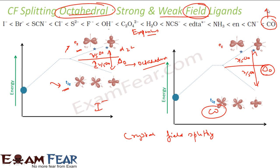Assuming we use the same metal, strong field ligands produce maximum splitting and weak field ligands produce minimum splitting. These are called strong and weak field ligands — not strong or weak ligands. The series that ranks them is called the spectrochemical series.